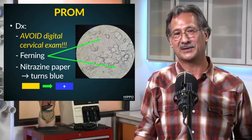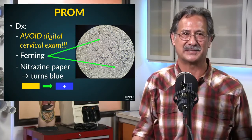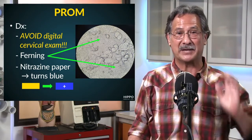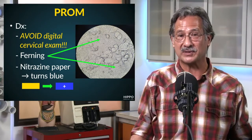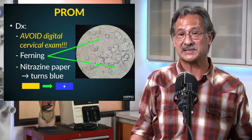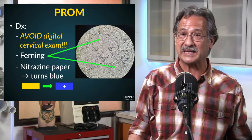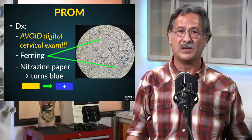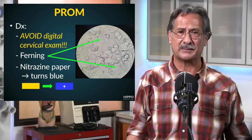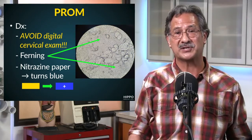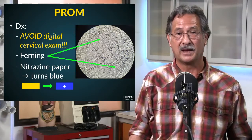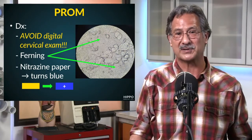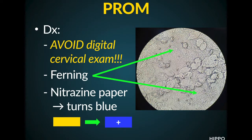How do we make the diagnosis? The diagnosis is made clinically, typically. But there is a key pearl: we want to make sure we avoid performing a digital cervical exam, as this is associated with increases in latent period and an increase in infant morbidity and mortality. Instead, we want to do a sterile speculum exam, looking for vaginal pooling of amniotic fluid, a cervical os demonstrating leaking fluid, or maybe vernix or meconium.